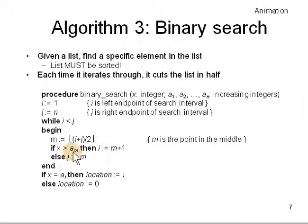And then if x is greater than the midpoint am, then you move the left point i to m plus 1. Otherwise you move the right point j to m. You cut that thing into half. And then finally when you finish with this loop, when i is equal to or greater than j you come here. And then if x equals ai then you found it. Otherwise location equals 0. So in this case it is log to the base 2 of n, the complexity. Because you are dividing by half every time.